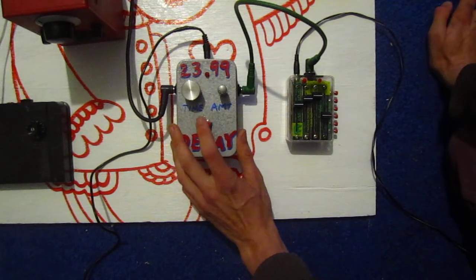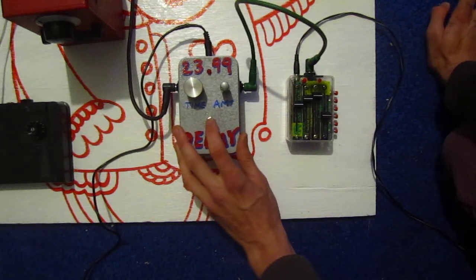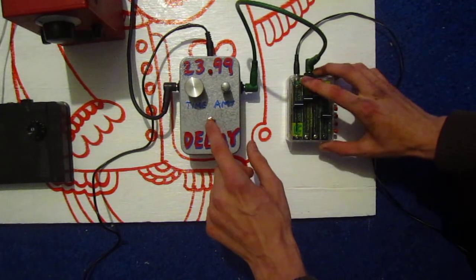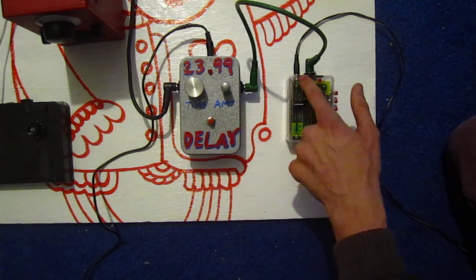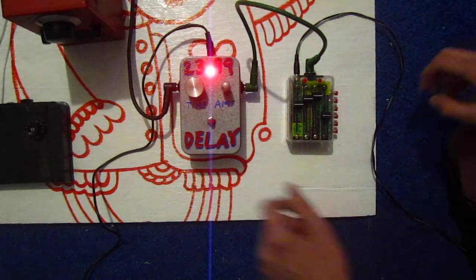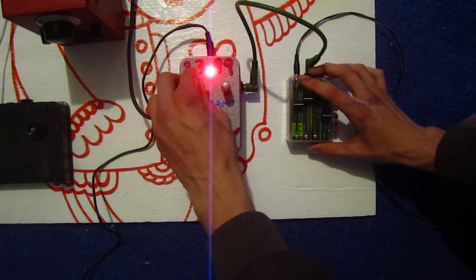And then here is a delay I made. I've got a momentary switch that I made latching with a 555 chip. So you only have to press it - like this one I have to hold it down, but this you can just press and it latches. And now the delay should be on.